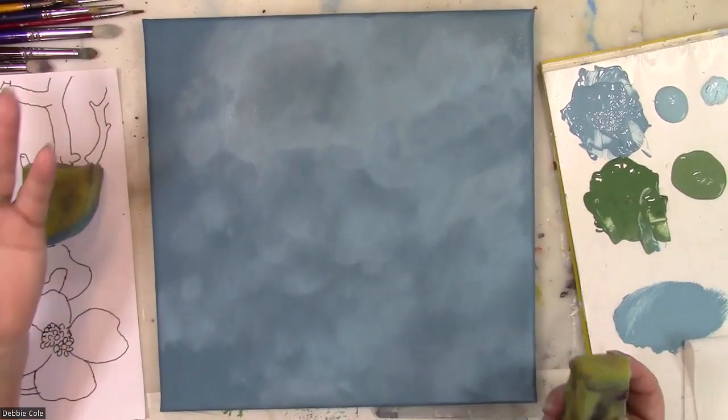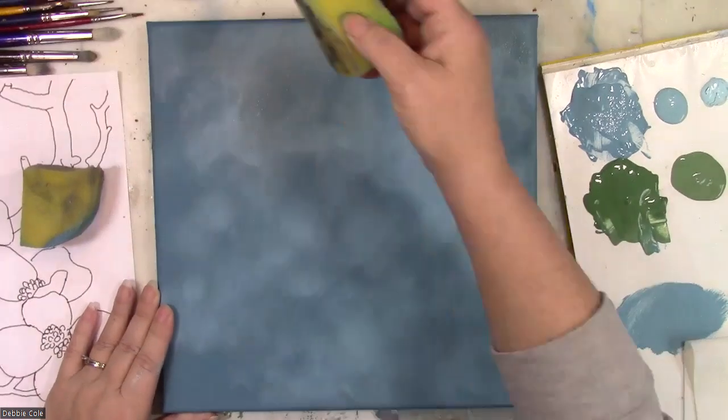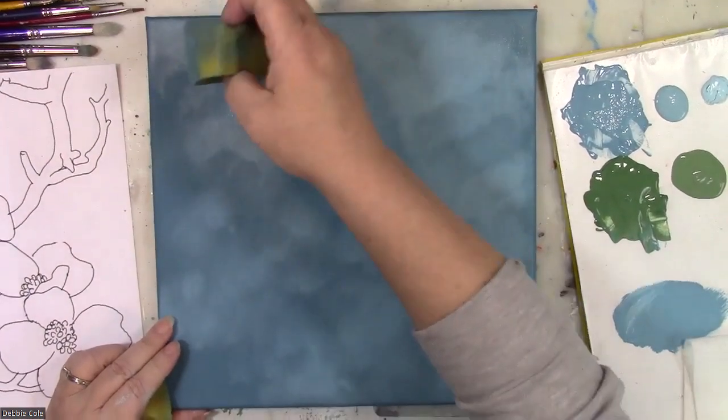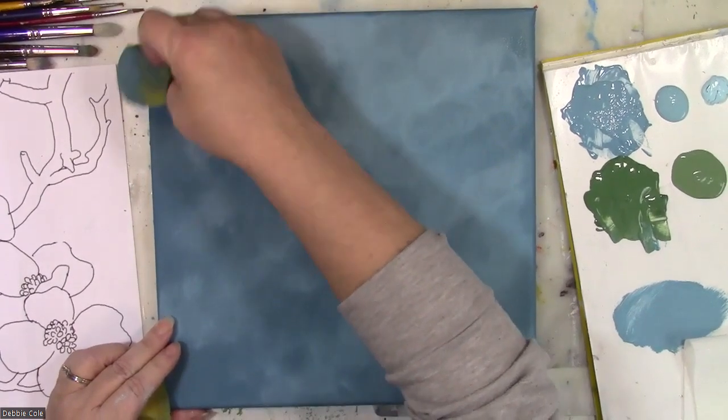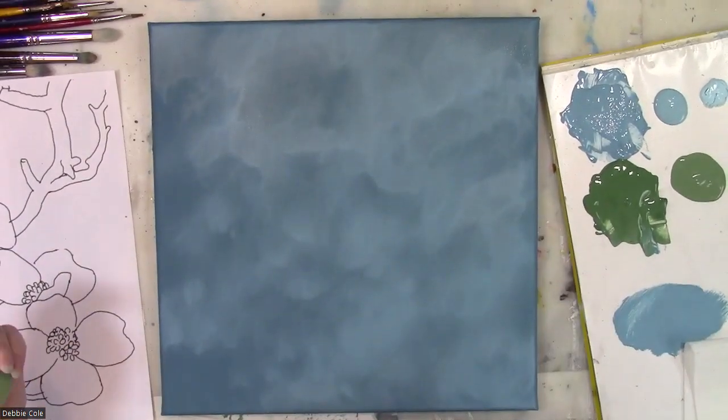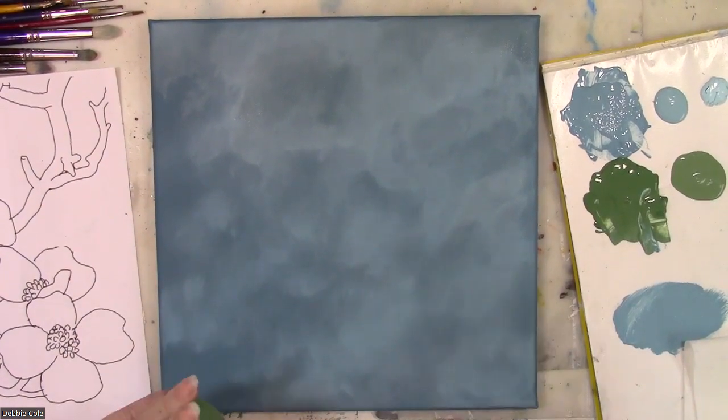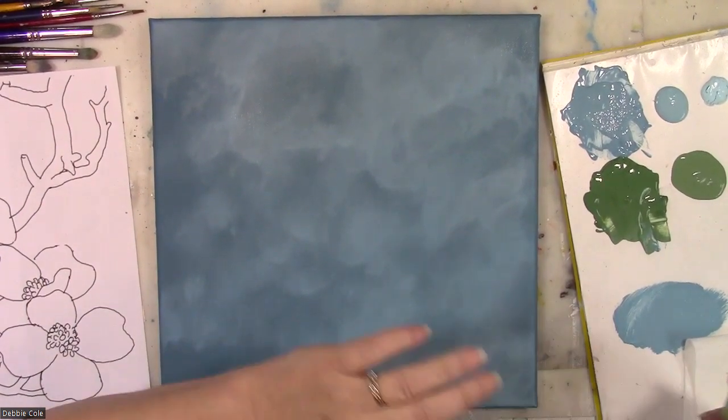So you can see I've been going back and forth, back and forth. So it's kind of looking airy, kind of looking like a cloud. But we're going to want to have a lot of colors.